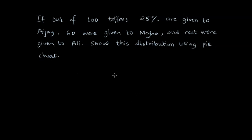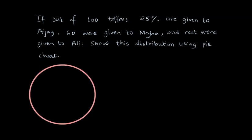We want to show this information using a pie chart. All the toffees are distributed among three different people — Ajay, Megha, and Ali. We will use three different sectors in a pie to show how many toffees each of them has got. But we don't know how big each sector is, so I've drawn a circle but haven't created any sectors yet. We will divide this pie into sectors after doing some calculations.